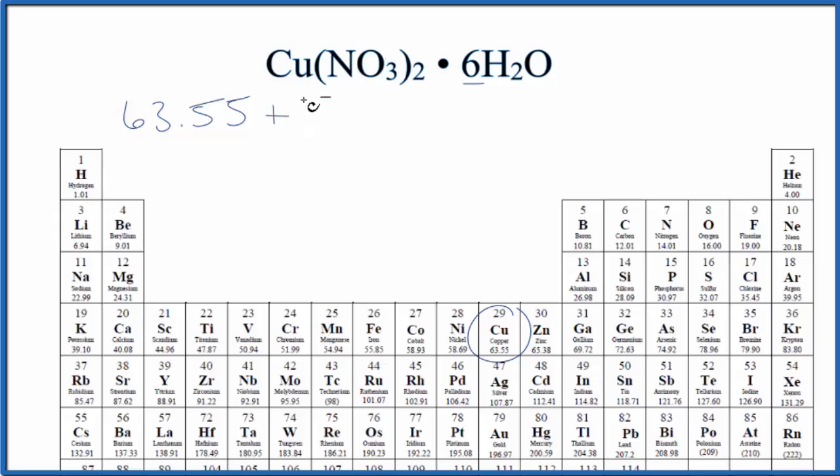Plus, for the nitrate here, let's put brackets around it. We have 14.01, that's the molar mass of nitrogen. We have one of those, plus oxygen is 16.00. We have three oxygen atoms there.